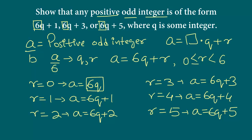Since a is a positive odd integer, a cannot equal 6q because 6q is always even. For 6q plus 1: 6q is always even, and adding 1 gives an odd number, so this is a valid form. 6q plus 2 is even, so it doesn't work. 6q plus 3 is odd, so it works. 6q plus 4 is even, so it doesn't work. 6q plus 5 is odd, so it works.